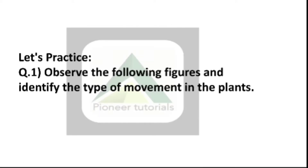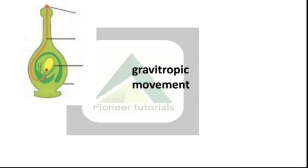So let's start the activity. Question number 1: Observe the following figures and identify the type of movement in the plants. Now this is the plant's ovule, and the above one is stigma. This is connected downwards, so it's a gravitropic movement.